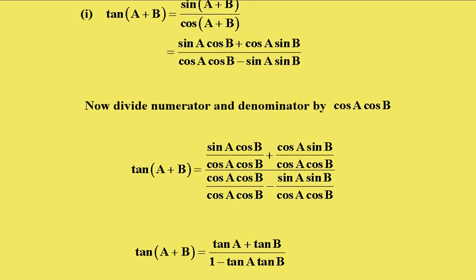Because what happens then is these cos B's cancel and you get tan A, and these cos A's cancel here and you get sin B over cos B, which is tan B. And in the denominator, this becomes tan A tan B. So we have tan A plus tan B over 1 minus tan A tan B.